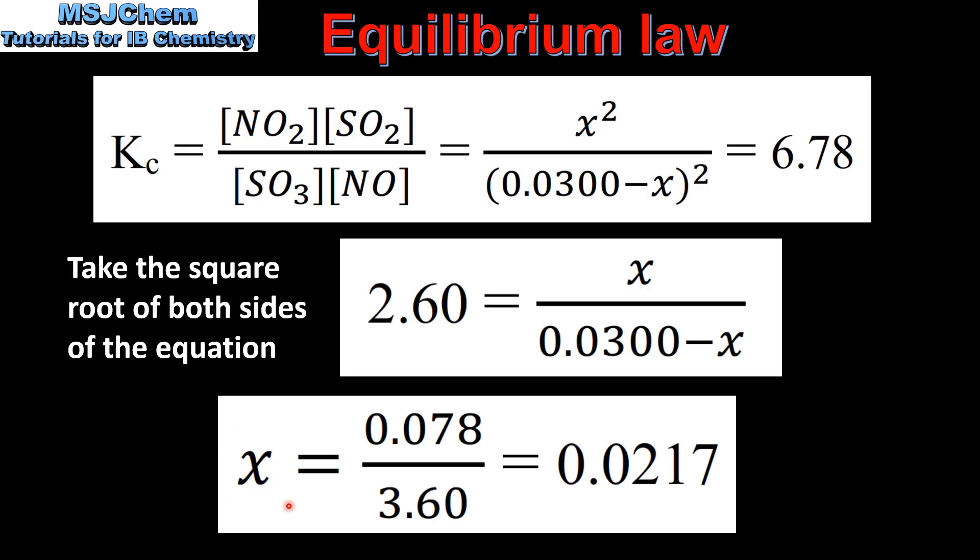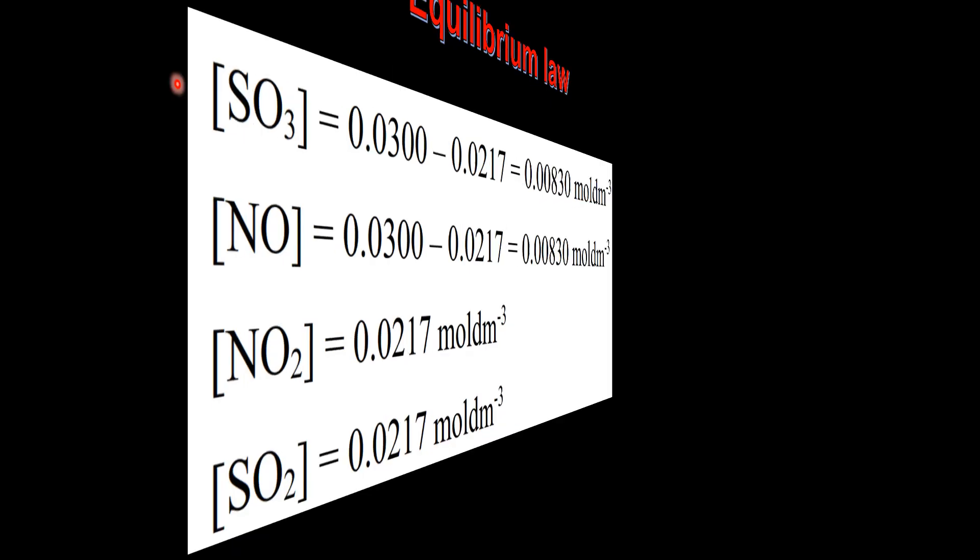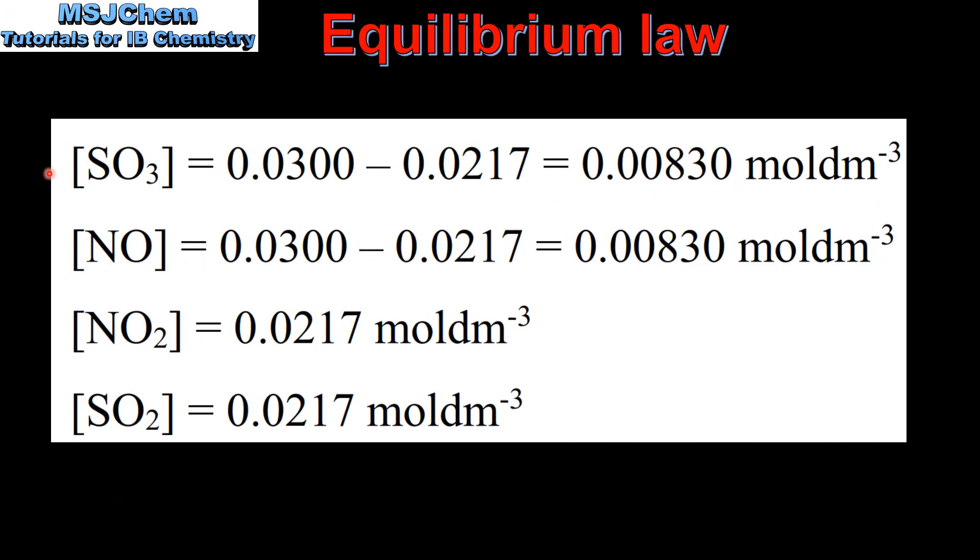Finally we solve for X which is 0.0217, and now we can calculate the equilibrium concentrations of the reactants and the products. For SO3 and NO we subtract X from the initial concentrations to give us the equilibrium concentrations. And for NO2 and SO2, because the initial concentration was 0, we add X to give us these equilibrium concentrations.